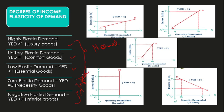Basically we divide goods into two categories. Among the normal goods, there are various sub-categories. In this section, we will study the income elasticity of demand and its relation with the type of commodity.